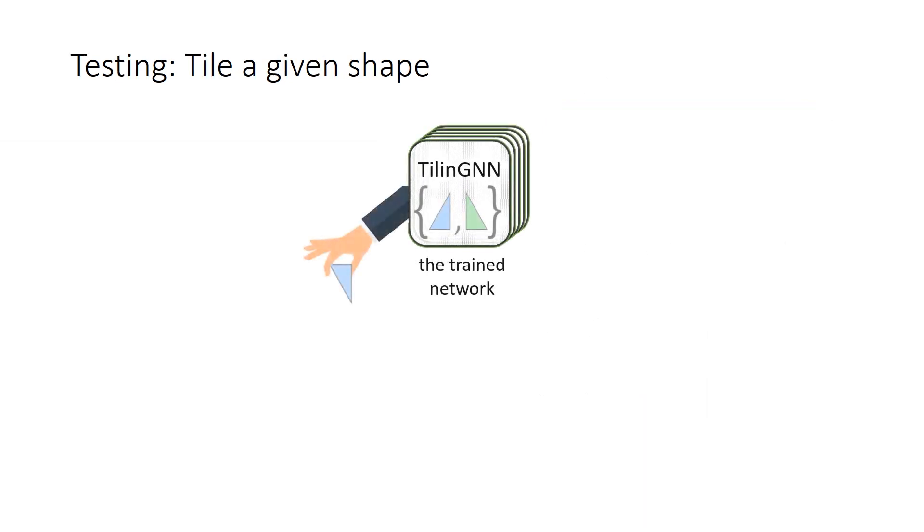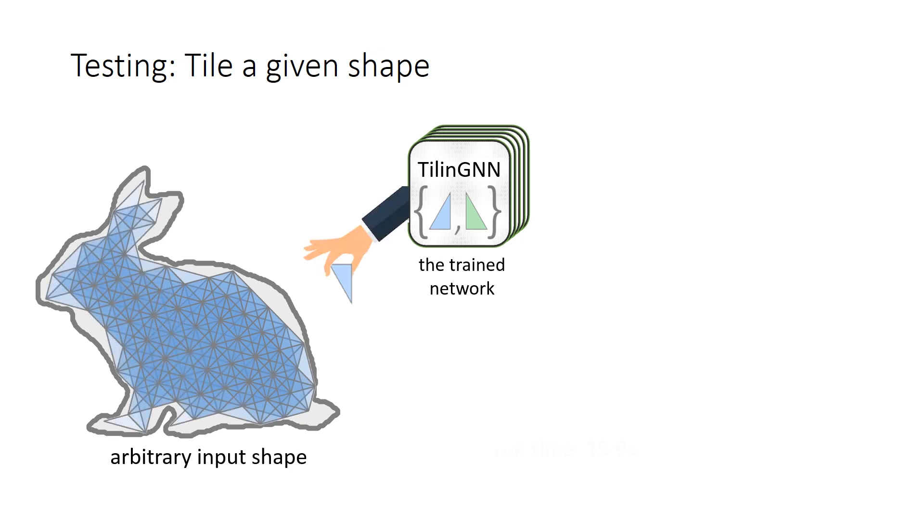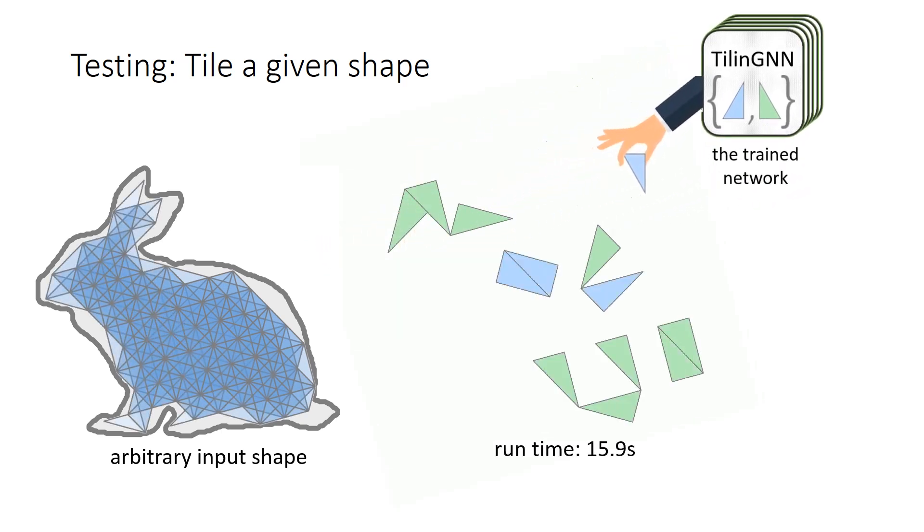At test time, we apply the trained network to predict tile locations for arbitrary shapes, where we first locate tile placements and progressively fill the shape with the help of our network.